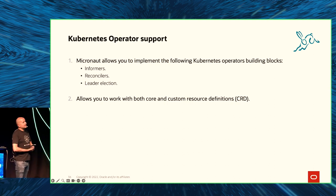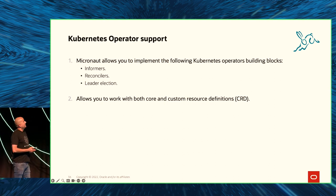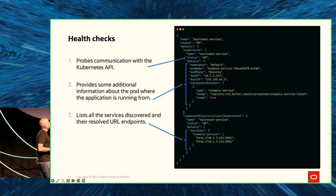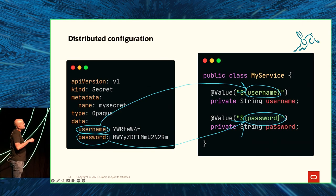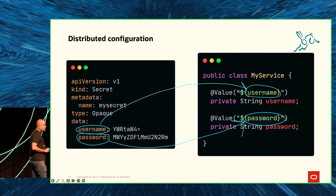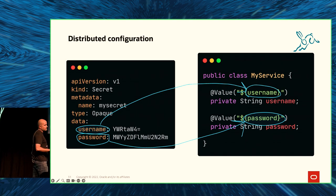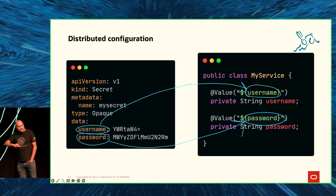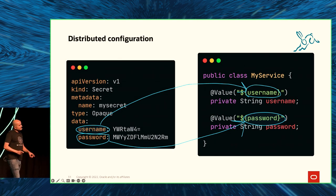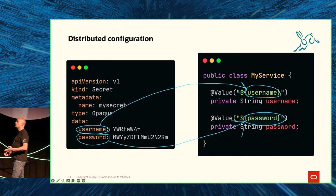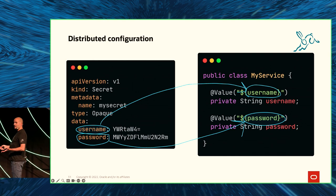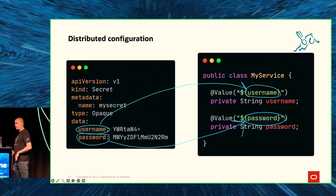Operators are typically used with custom resource definitions. If we look at a YAML with kind: Secret and apiVersion v1, that's a core Kubernetes resource. But the Kubernetes API can be extended with different kinds of objects — we can create our own types. This is normally used in combination with operators, because introducing a new custom resource definition allows users to interact with the cluster via those custom resources.